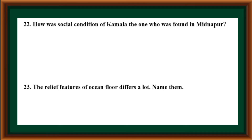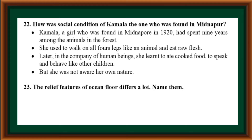How was the social condition of Kamala, the girl found in Midnapore? Kamala, a girl found in Midnapore in 1920, had spent nine years among animals in the forest. She used to walk on all four legs like an animal and eat raw flesh. Later, in the company of human beings, she learned to eat cooked food, to speak and behave like other children, but she was not aware of her own nature.